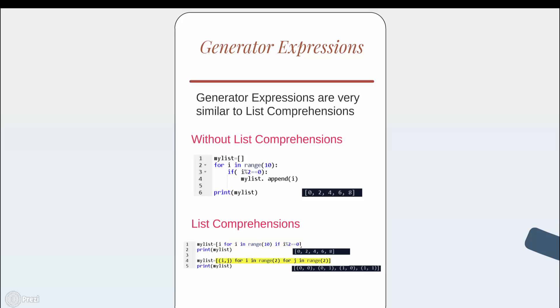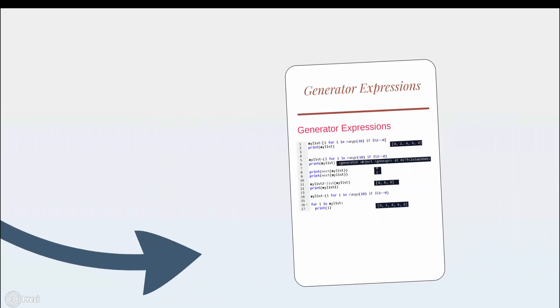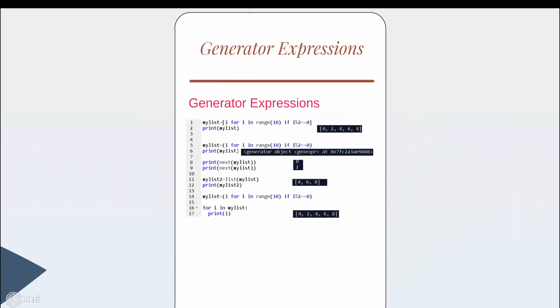List comprehensions also support multiple levels of looping, as shown in the next example. But Python provides something more efficient, known as generator expressions.